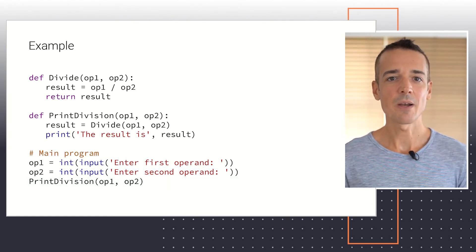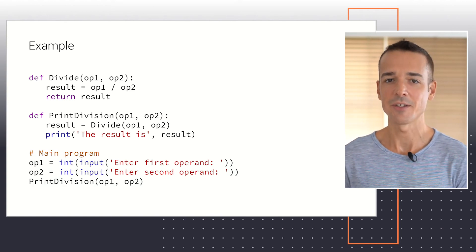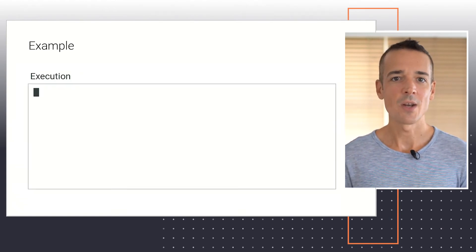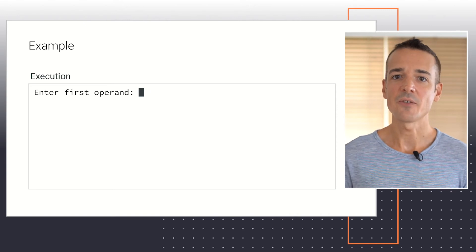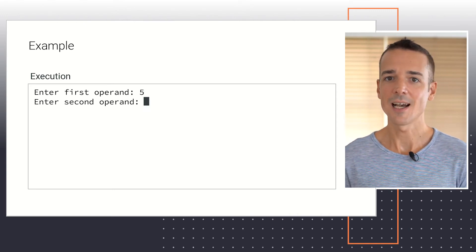Let's run this program and enter a combination of values that intentionally causes a division by zero exception. When asked for the first operand, I'll enter 5, and when asked for the second, I'll enter 0.